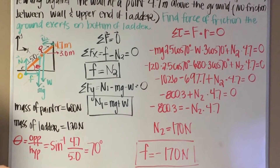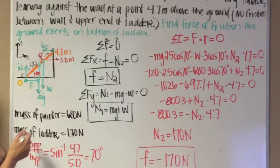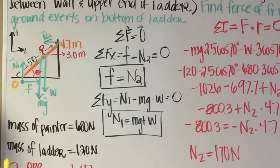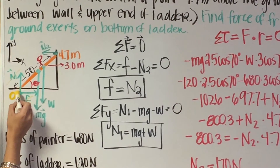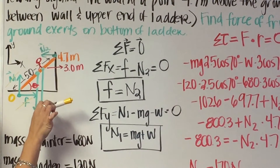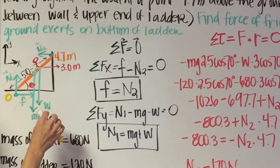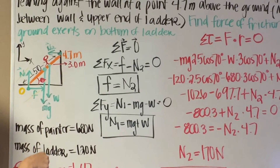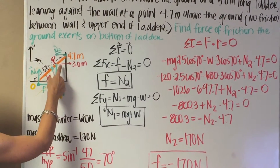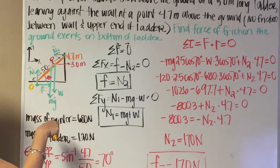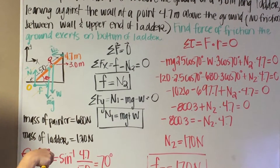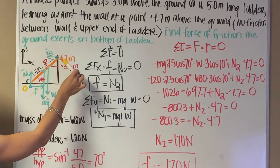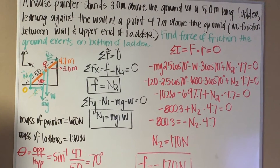Now we draw in all of our forces. We have the normal force pushing up on the ladder from the ground — that's our first normal force. We have the frictional force pushing against the ladder horizontally. We have the weight of the ladder pulling down in the negative direction due to gravity, the weight of the painter also pulling down, and the second normal force pushing against the ladder from the wall.